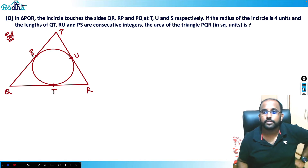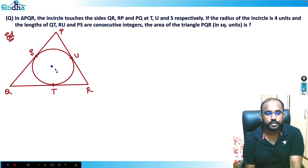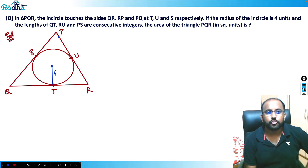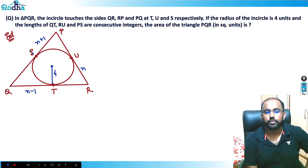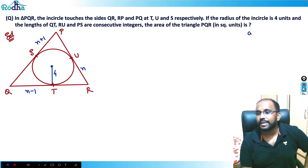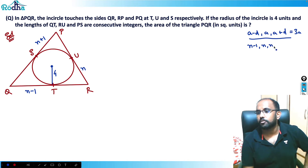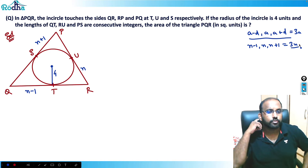The radius of the incircle is four units. QT, RU, and PS are consecutive integers. I'll take QT as n−1, RU as n, and PS as n+1 — three terms of an AP with common difference 1, so their sum becomes 3n. This makes calculation easier. I could also take n, n+1, n+2; no issue either way.